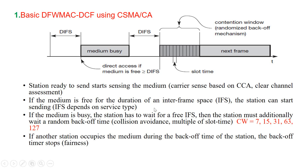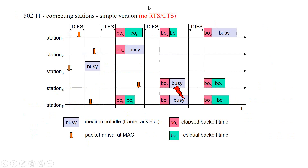To provide fairness, a back-off timer is added. Each node selects a random waiting time within the contention window. If a station does not get access to the medium in the first cycle, it stops its back-off timer, waits for the channel to be idle again for DIFS, and then resumes the counter. As soon as the counter expires, the node accesses the medium. Deferred stations do not choose a new random back-off time — they continue from where they stopped, giving them a statistical advantage over newly arrived stations.